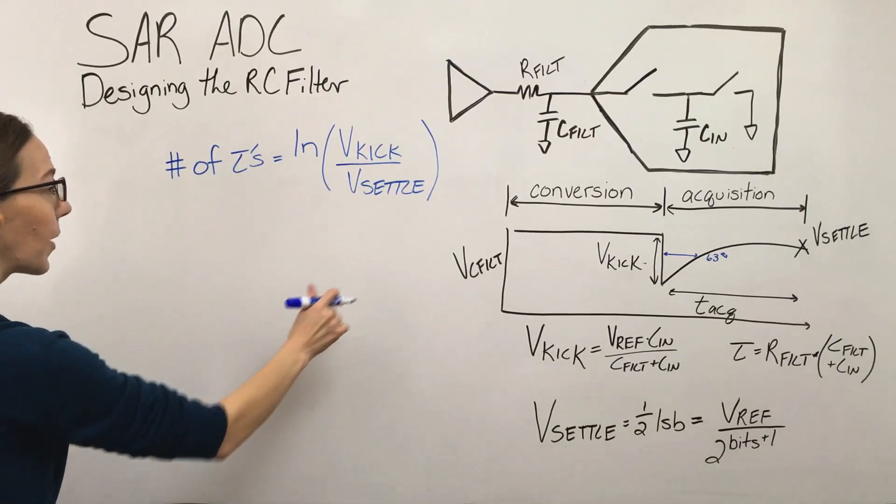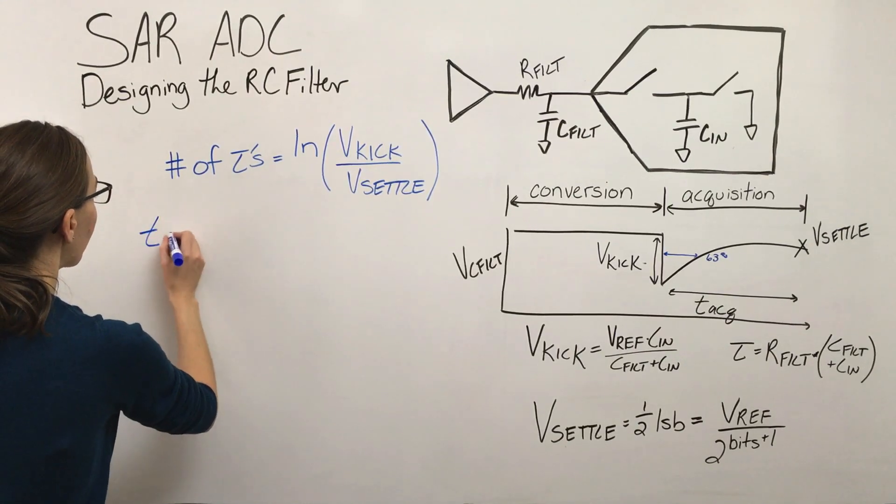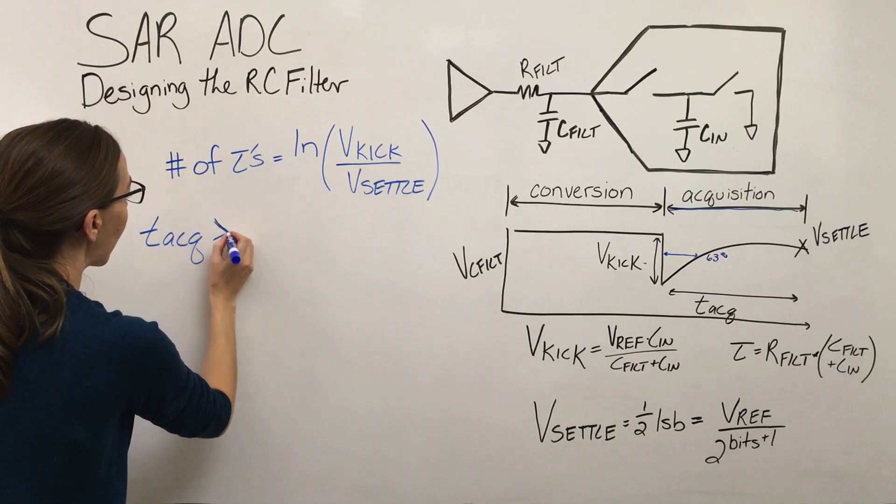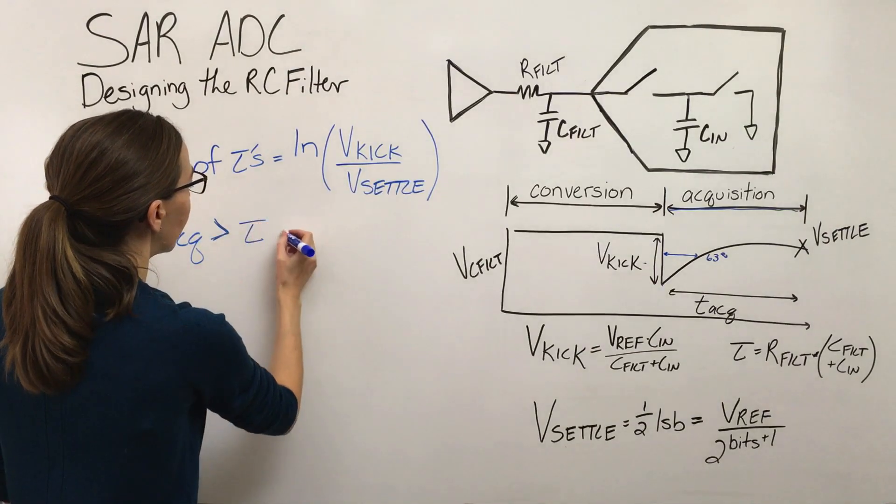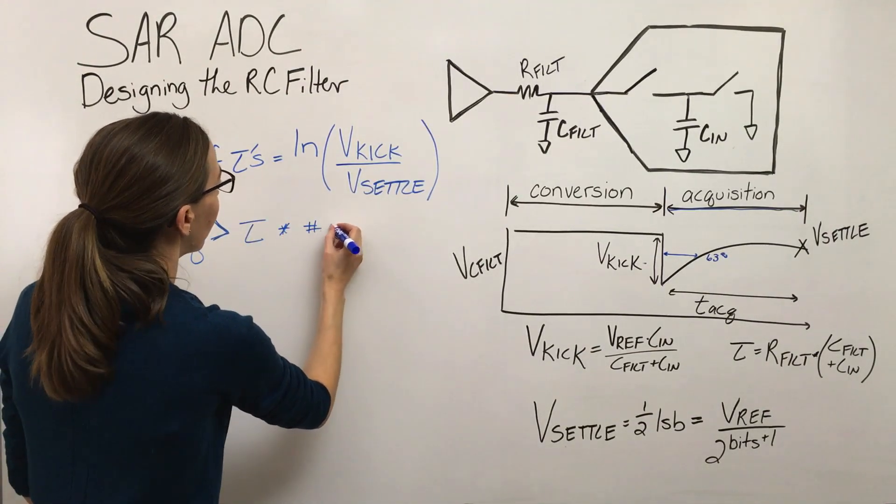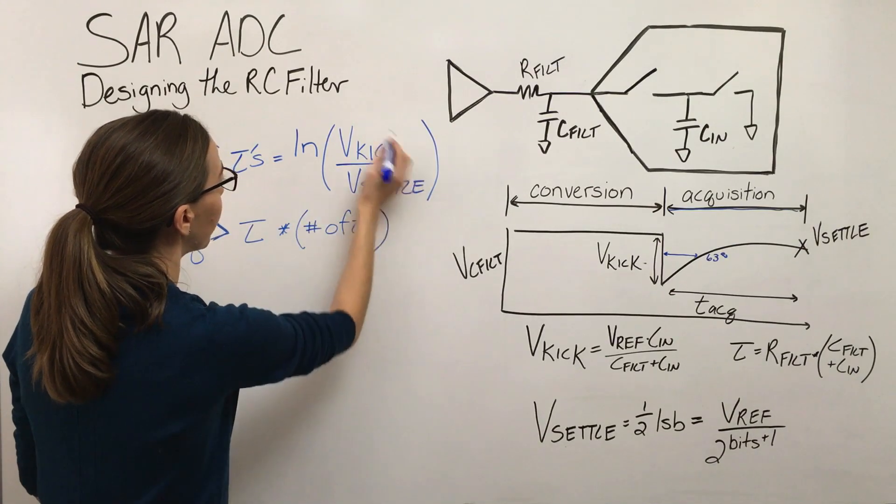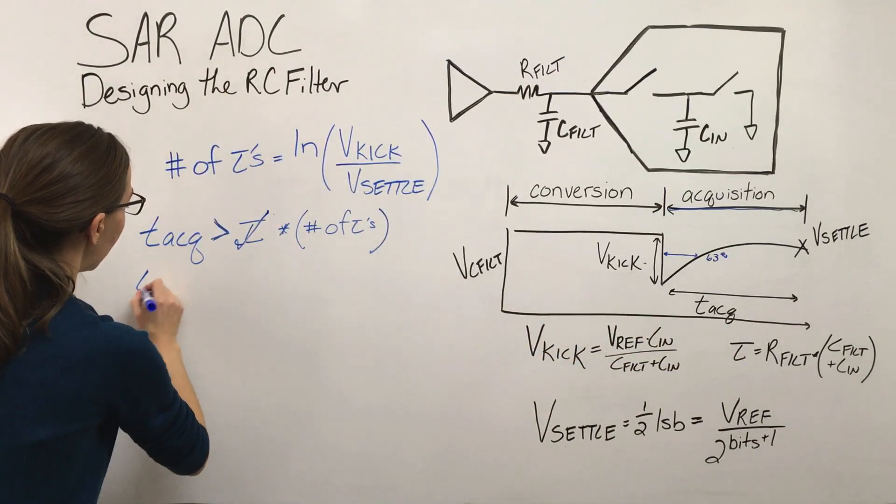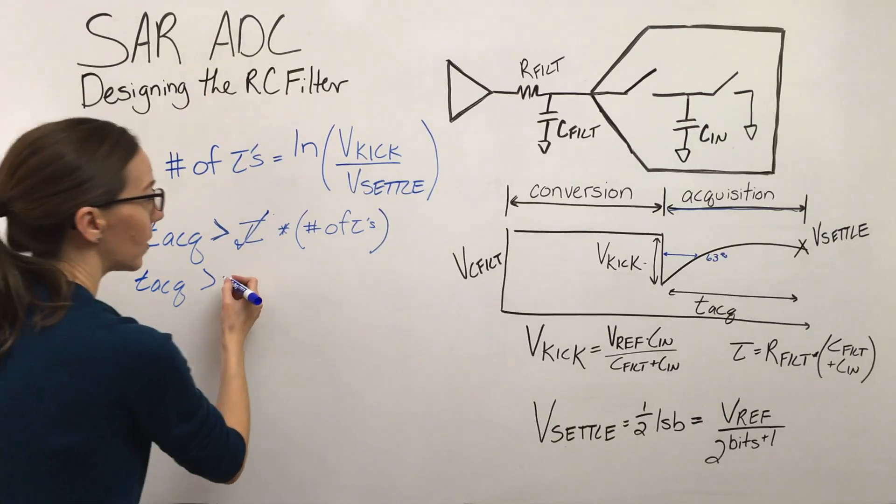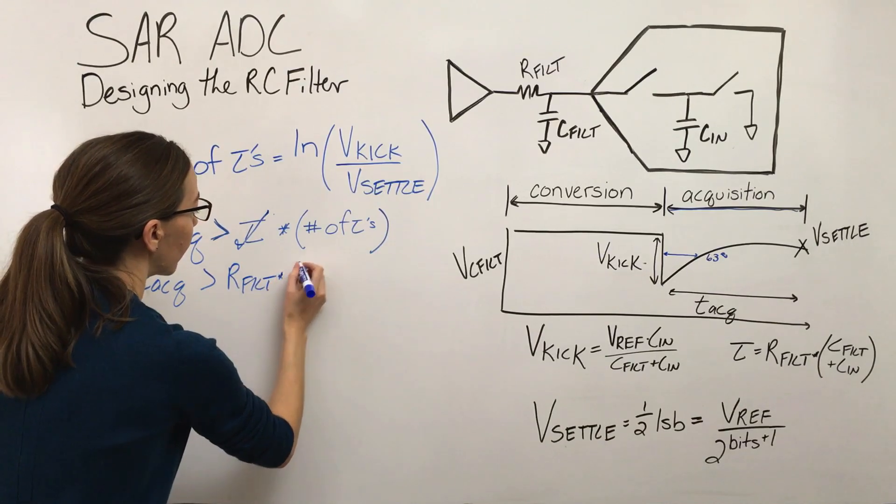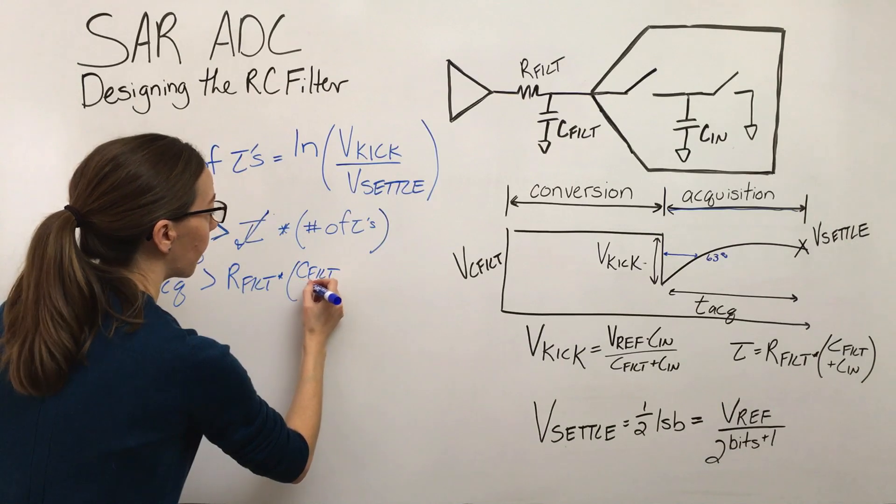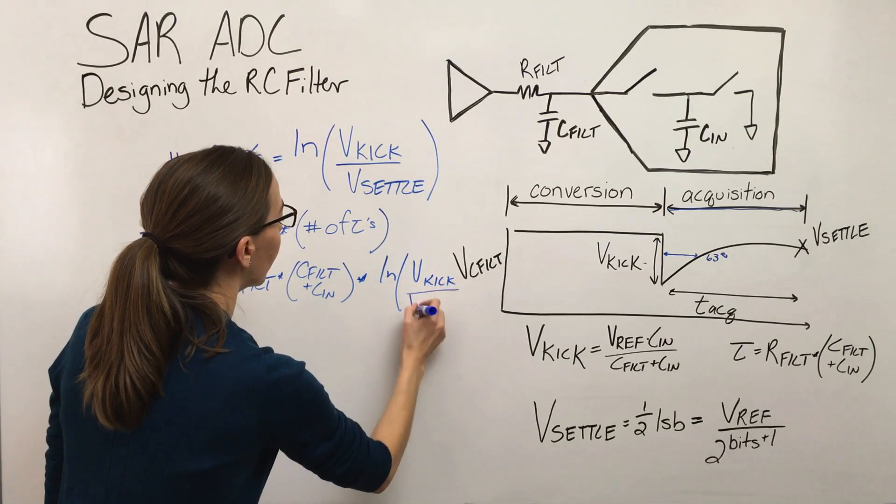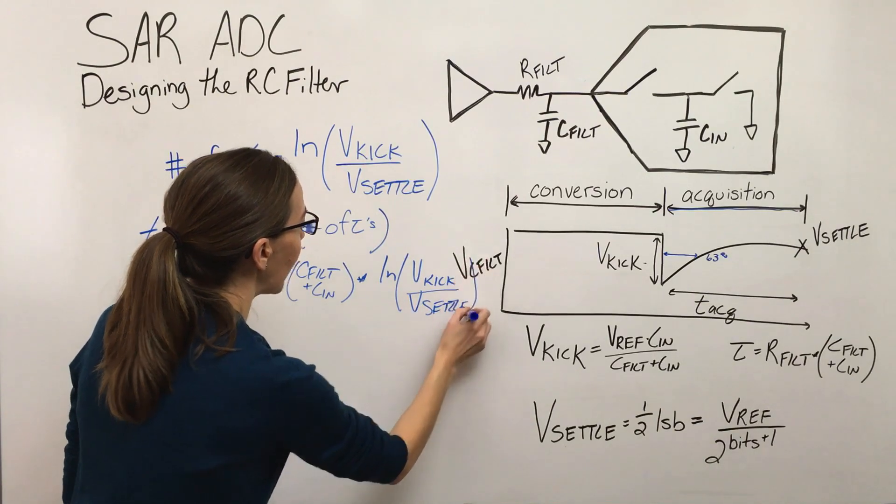And then to kind of pull it all together, what we need to know is that our acquisition time. So we've got this acquisition time here, we need to know that it's at least going to be enough time to settle our time constant times the number of time constants required based on that equation. So we need this acquisition time to at least be as large as this time constant times the number of time constants.